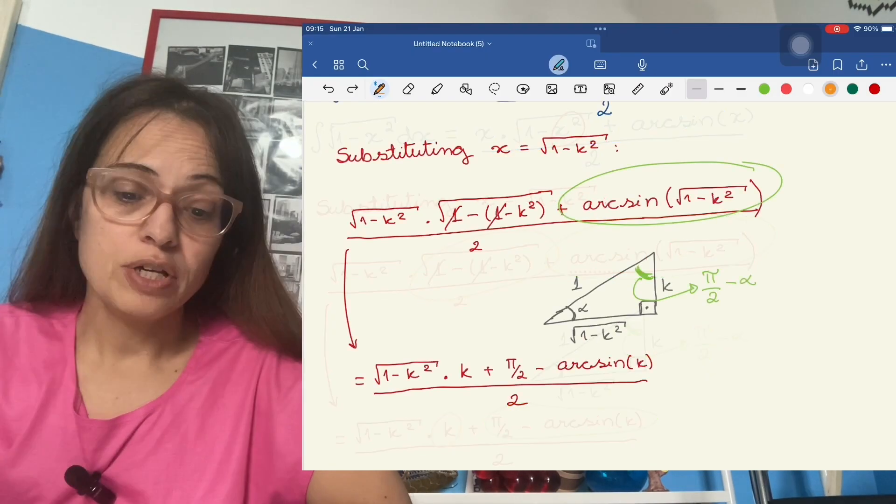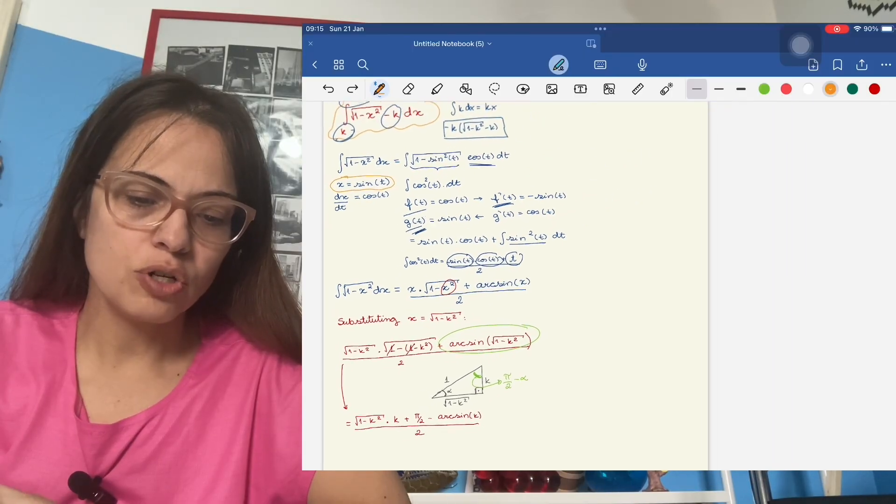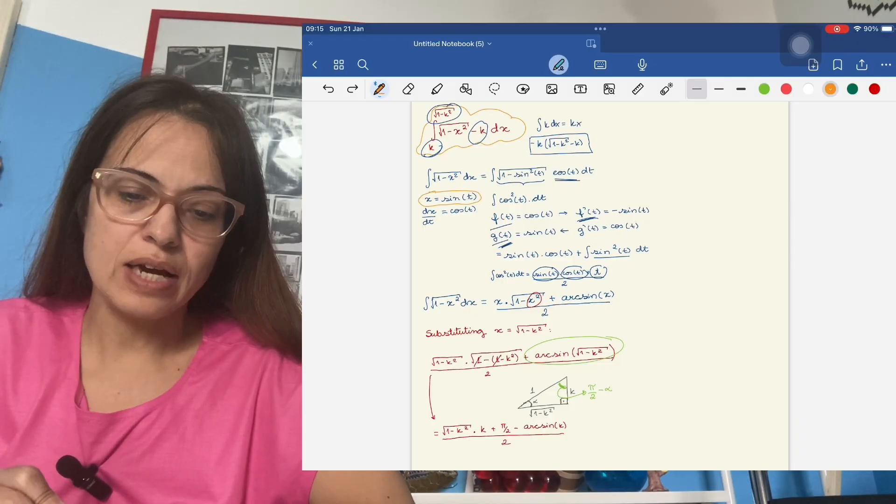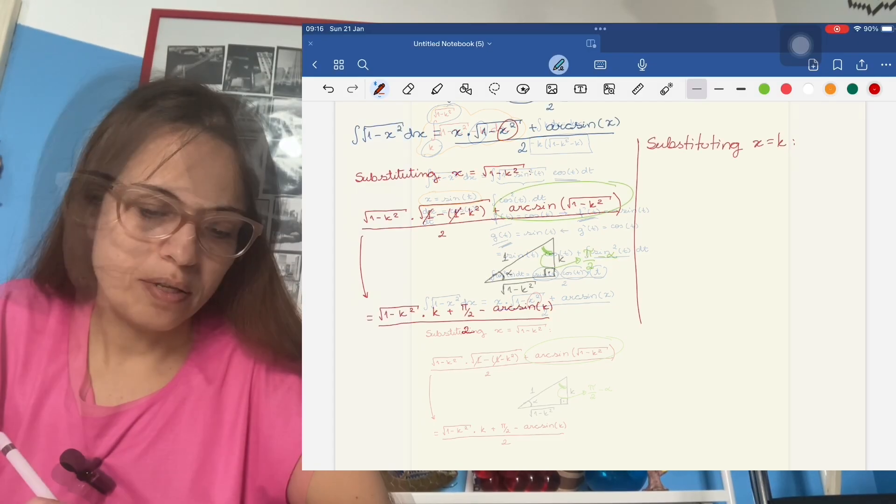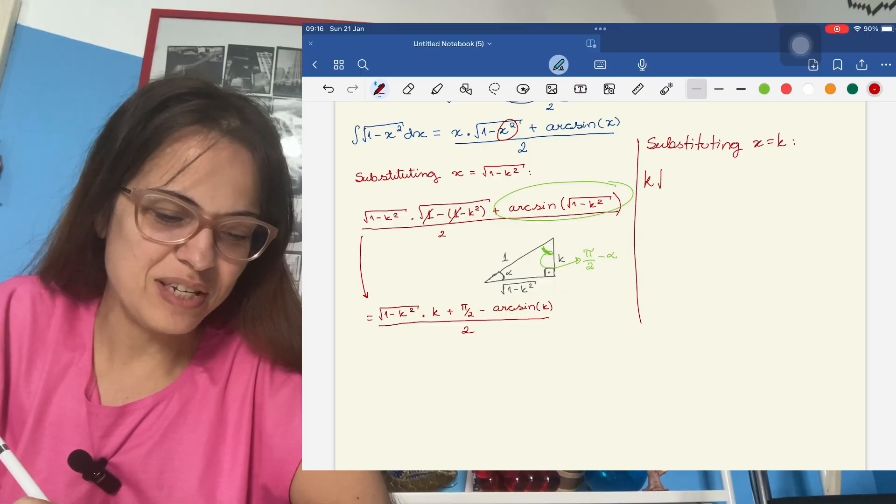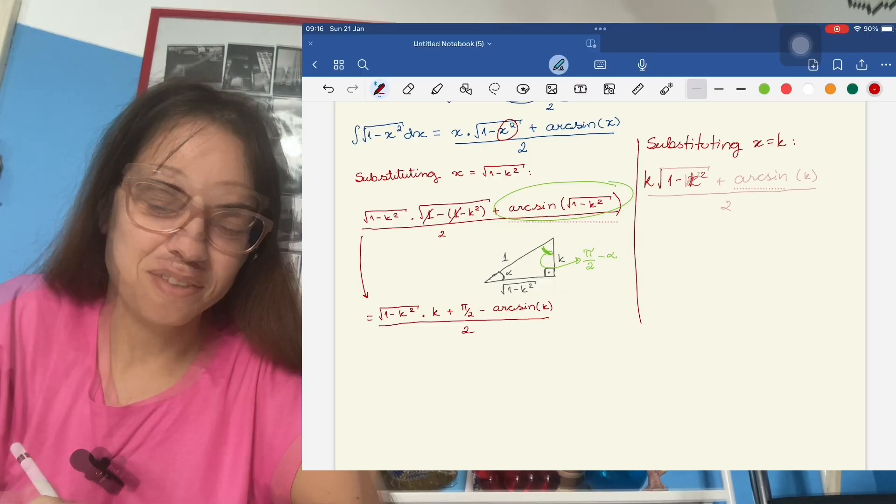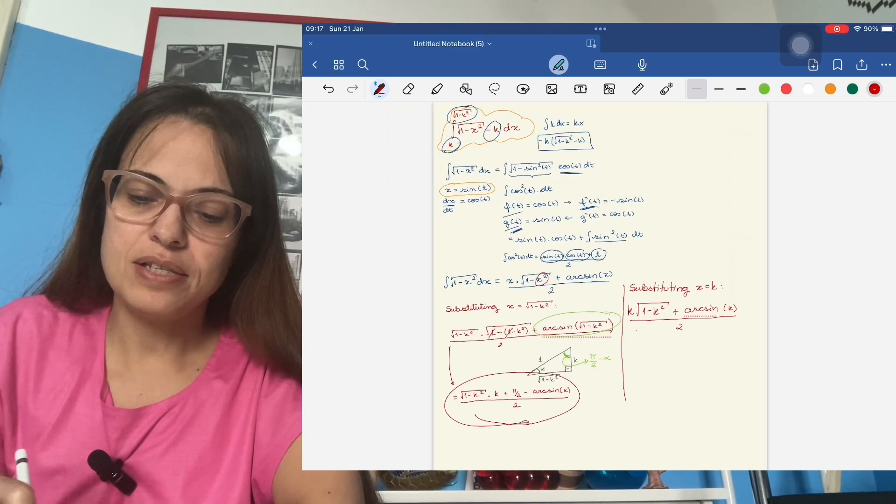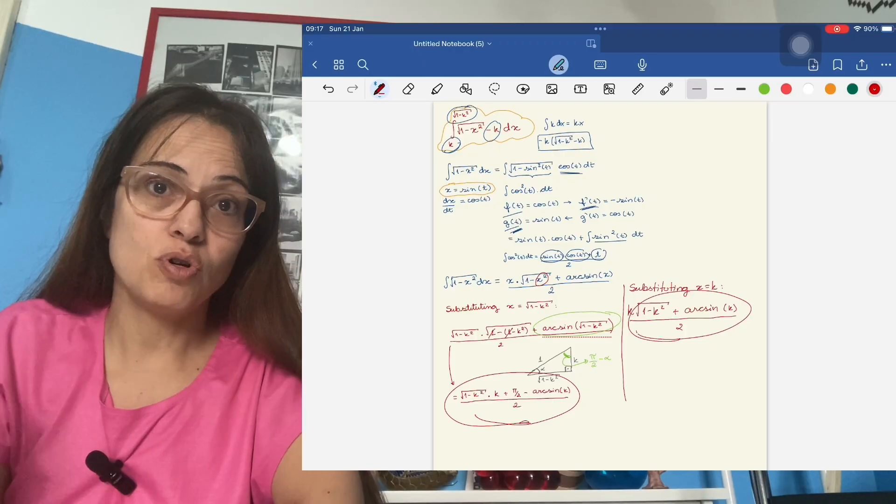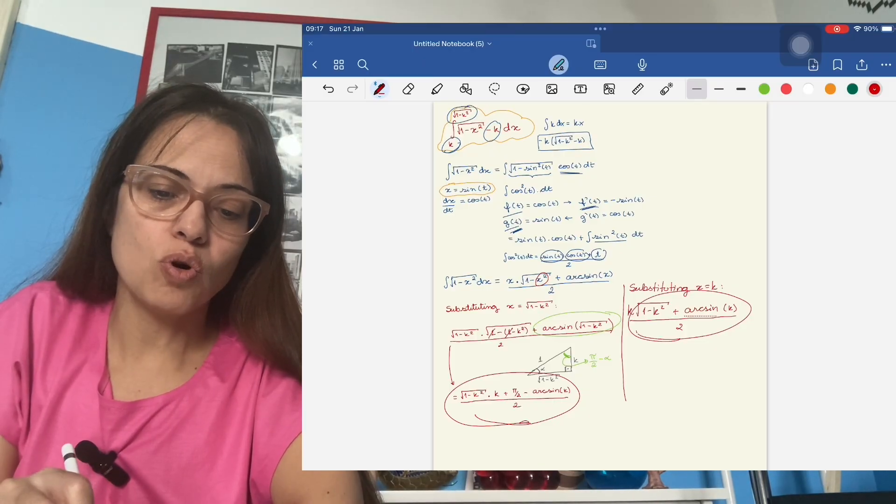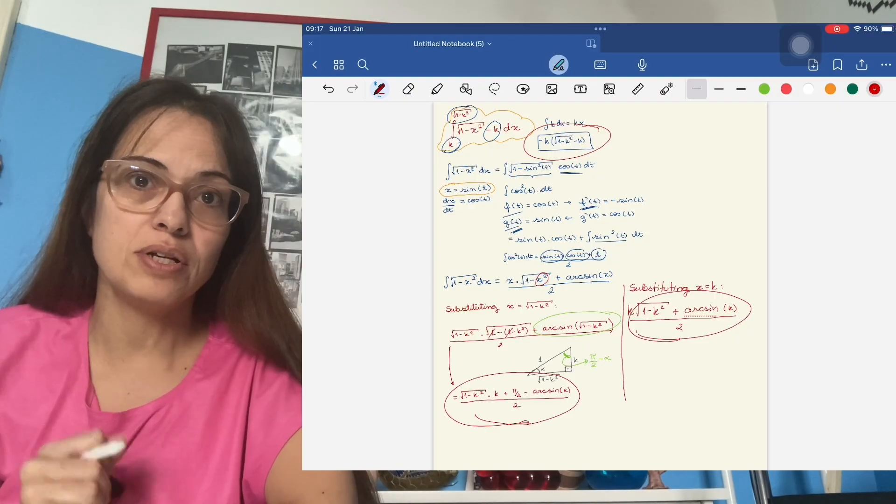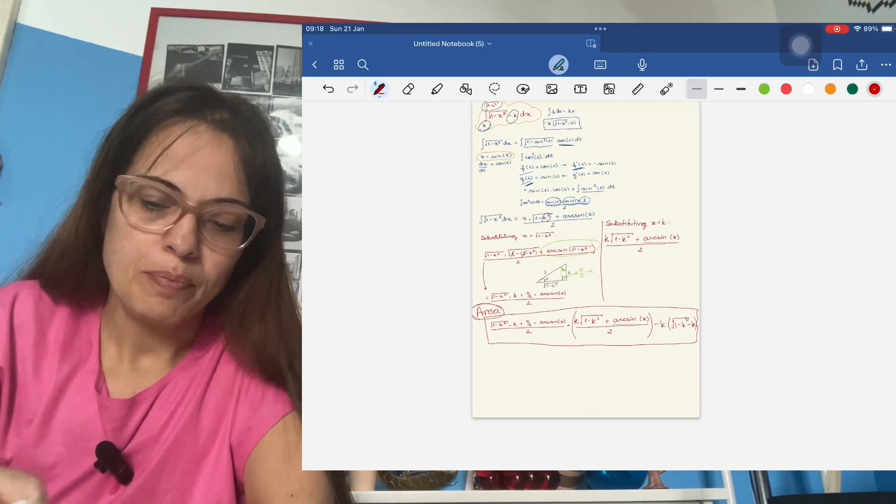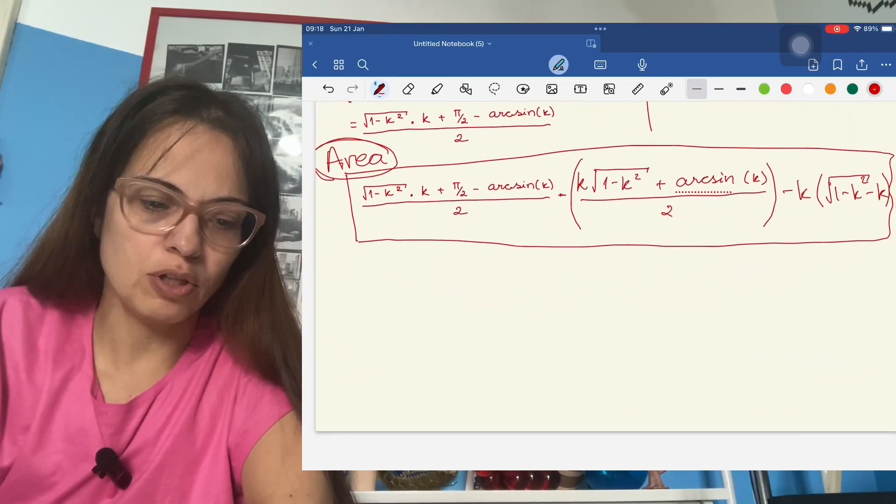So that was one of the limits of integration of the thing that we are doing. Now we need to substitute also X equals K to get the other limit. This one's a little bit easier. It's just writing the same thing again, but with K instead of X. But to finish solving the area problem, we need to do this one minus this one, which is the fundamental theorem of calculus. And then we can't forget to also subtract this other term that we calculated in the beginning. This is the whole thing. This is the area of the shape in the picture. But we can simplify this expression quite a lot. And that is the final answer to the problem.